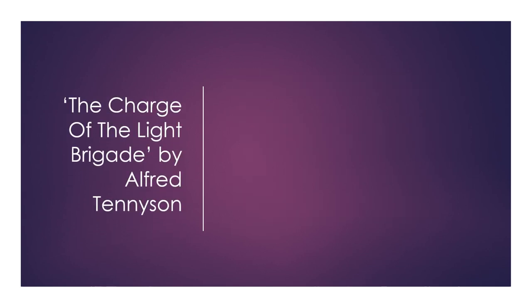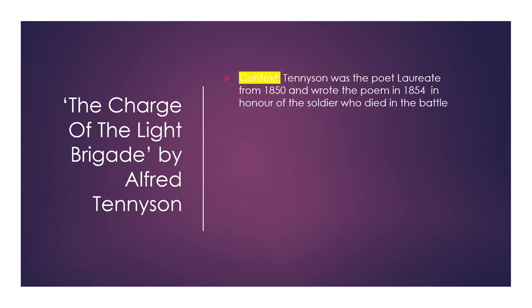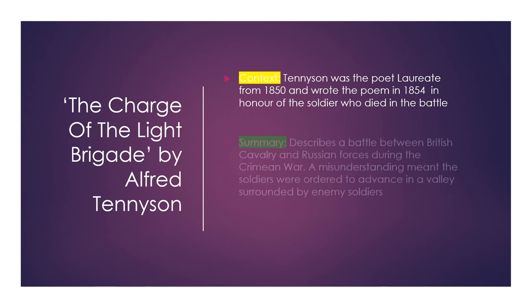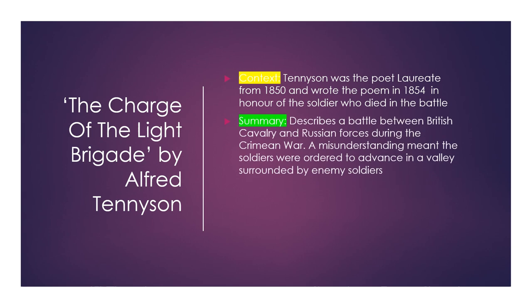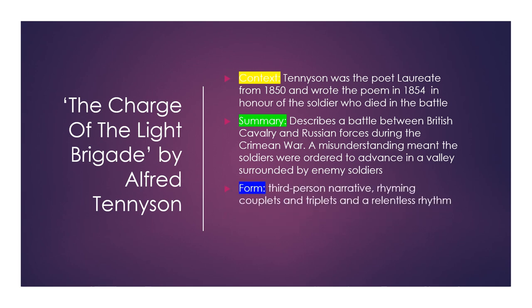The Charge of the Light Brigade by Alfred Tennyson. Tennyson was the poet laureate from 1850 and wrote the poem in 1854 in honour of the soldiers who died in the battle. It describes a battle between British cavalry and Russian forces during the Crimean War. A misunderstanding meant that the soldiers were ordered to advance into a valley surrounded by enemy soldiers. The form is third person narrative with rhyming couplets and triplets and a relentless rhythm. The structure tells the story in chronological order from start to finish.